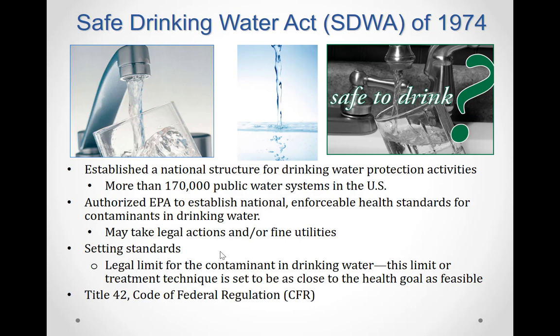The Safe Drinking Water Act protects the quality of drinking water in the U.S. and focuses on all waters actually or potentially designated for drinking use, whether from aboveground or underground sources. Under this act, the U.S. EPA is authorized to establish national enforceable health standards for contaminants in drinking water. The SDWA was originally passed in 1974 and focused on treatment as the means of providing safe drinking water. In 1996, it was further amended to include source water protection, operator training, funding for water systems, system improvement, and public information.